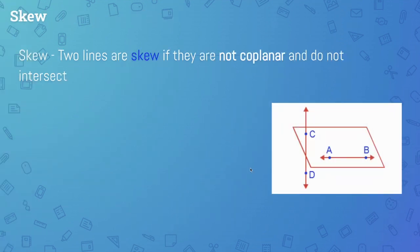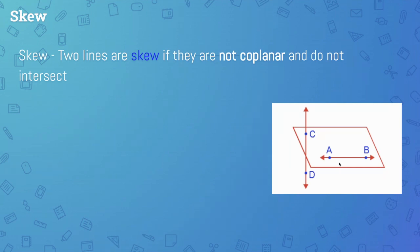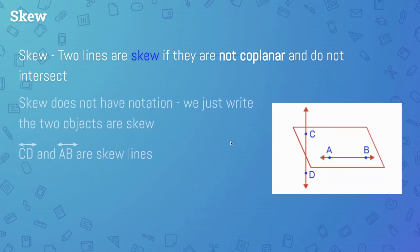This next case is new probably to you, and it is called skew. Two lines are skew if they're not coplanar and do not intersect. So if they are coplanar and don't intersect, then they're parallel. But if they're not coplanar and they do not intersect, they are skew. Here's a diagram: line AB is sitting on this plane indicated by this red parallelogram, while line CD is not on that plane. These two lines do not intersect — therefore, those two lines are skew. Skew does not have its own notation; we just write that the two lines are skew.